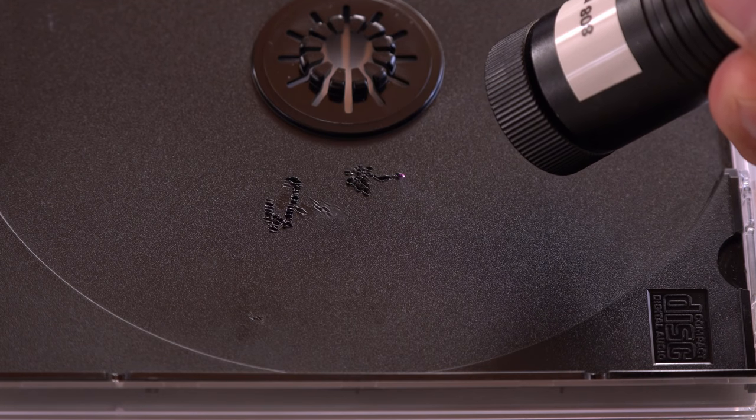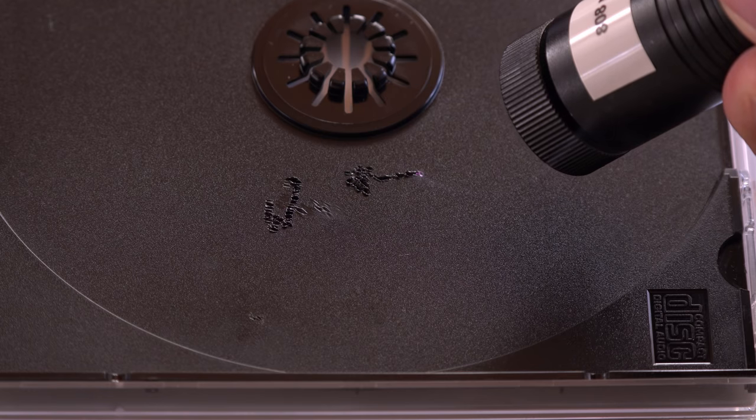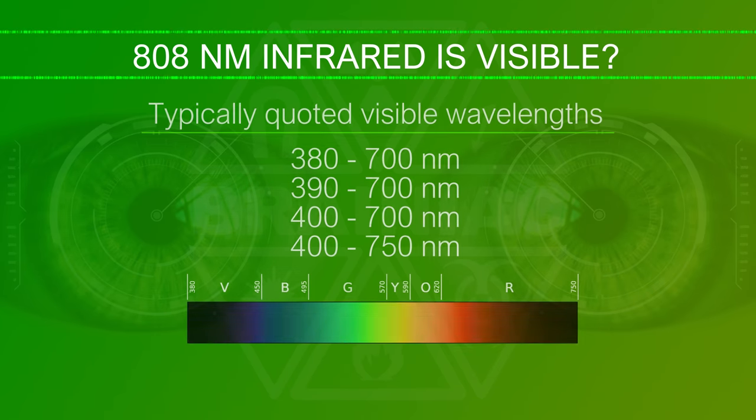But what wavelength is this then? Visible light only goes up to around 700 or 750 nm according to common sources. So 808 nm is considered infrared. Not visible.